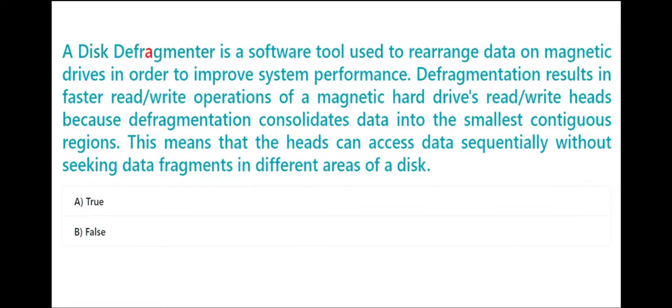A disk defragmenter is a software tool used to rearrange data on magnetic drives in order to improve system performance. Defragmentation results in faster read/write operations of a magnetic hard drive's read/write heads because defragmentation consolidates data into the smallest contiguous regions. This means that the heads can access data sequentially without seeking data fragments in different areas of a disk. A. True B. False. The correct answer is A. True.